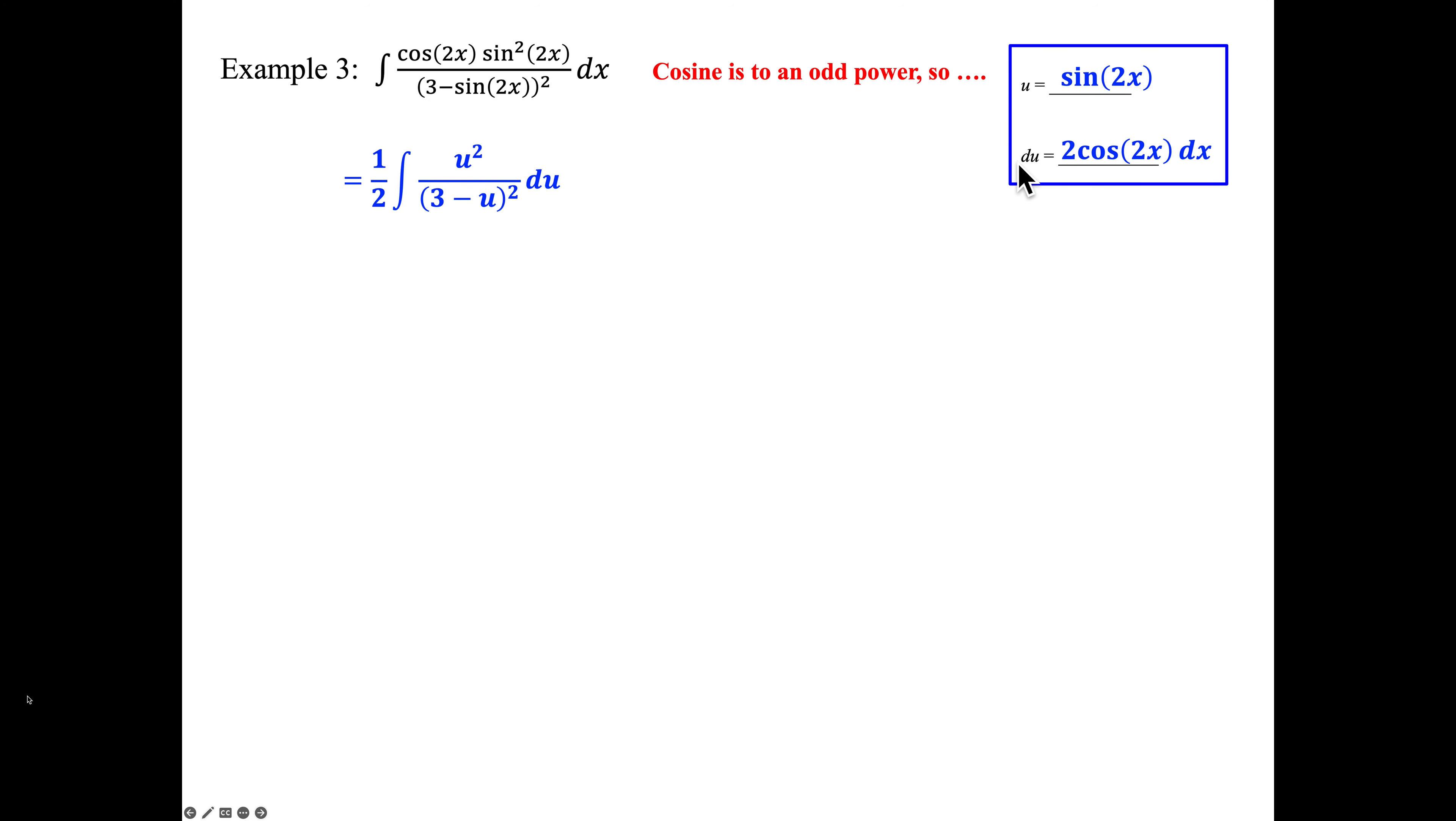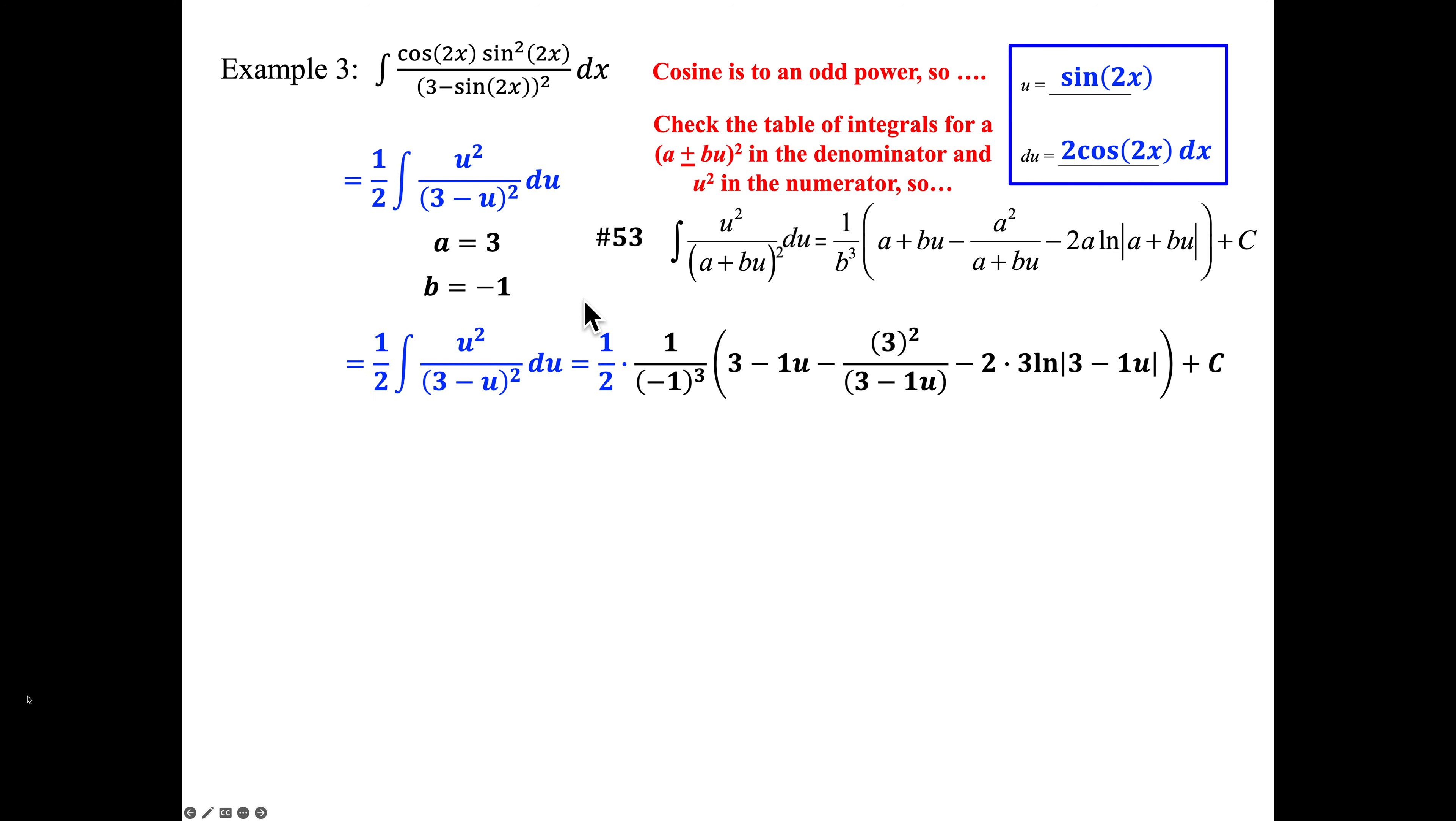We'll have to divide by 2, so we get a half DU. Put that in front of our integral. Now we have sine squared, which is U squared, over 3 minus U, all squared. We're looking in our table for A plus or minus BU binomial squared in the denominator, and also a U squared in the numerator. Number 53 is a perfect match. We identify A is 3, B is negative 1 because we need it to be a plus sign here.